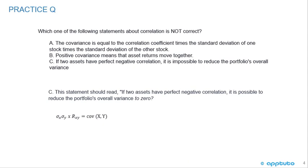The correct answer is C, because we're looking for the NOT correct statement. If two assets have perfect negative correlation, it is actually possible to reduce the portfolio's overall variance. A is correct — that is the correct formula for covariance. And B is correct — positive covariance indeed means that the asset returns move together.